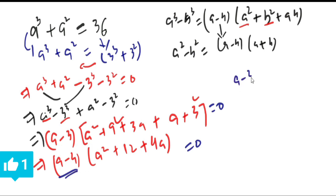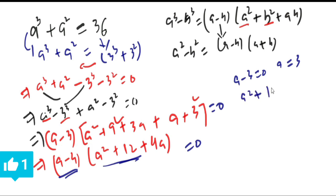From this, one root will become a - 3 = 0, so a = 3. From the other factor, a² + 4a + 12 = 0, which is a quadratic equation.